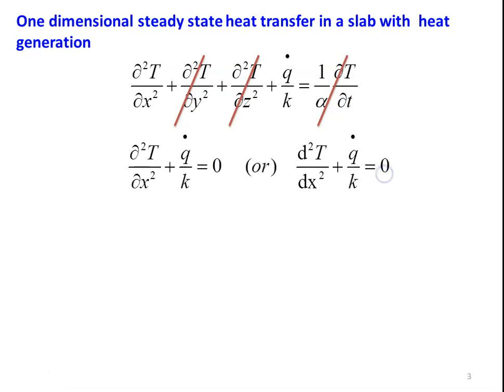So now the equation is d²T/dx² + q̇/k = 0, where q̇ is the heat generation rate per unit volume and k is thermal conductivity. Both q̇ and k are constants. Now the temperature is varying with respect to x alone.